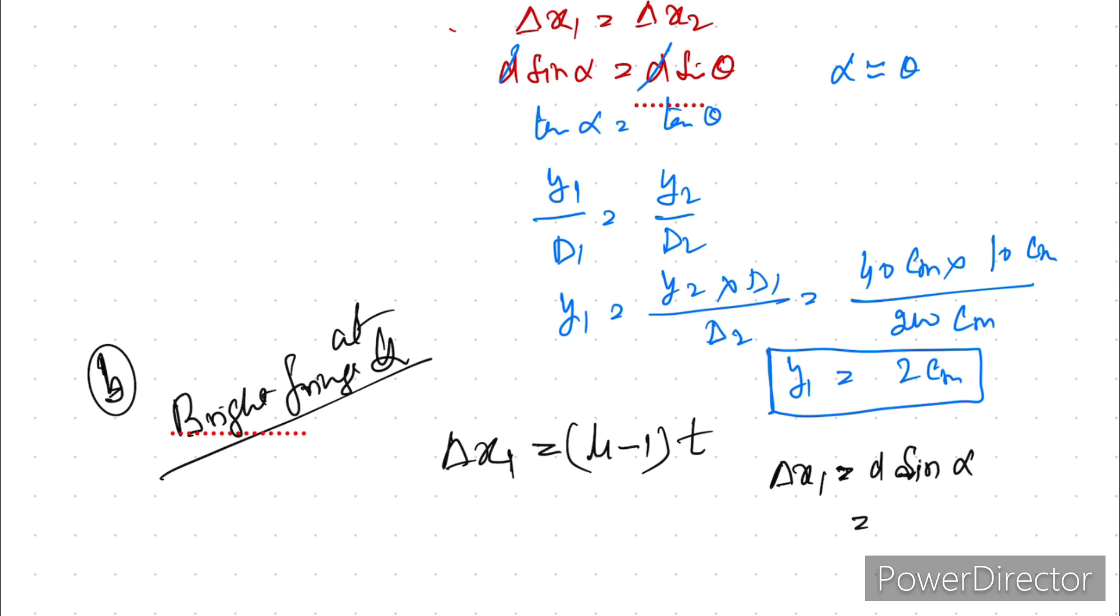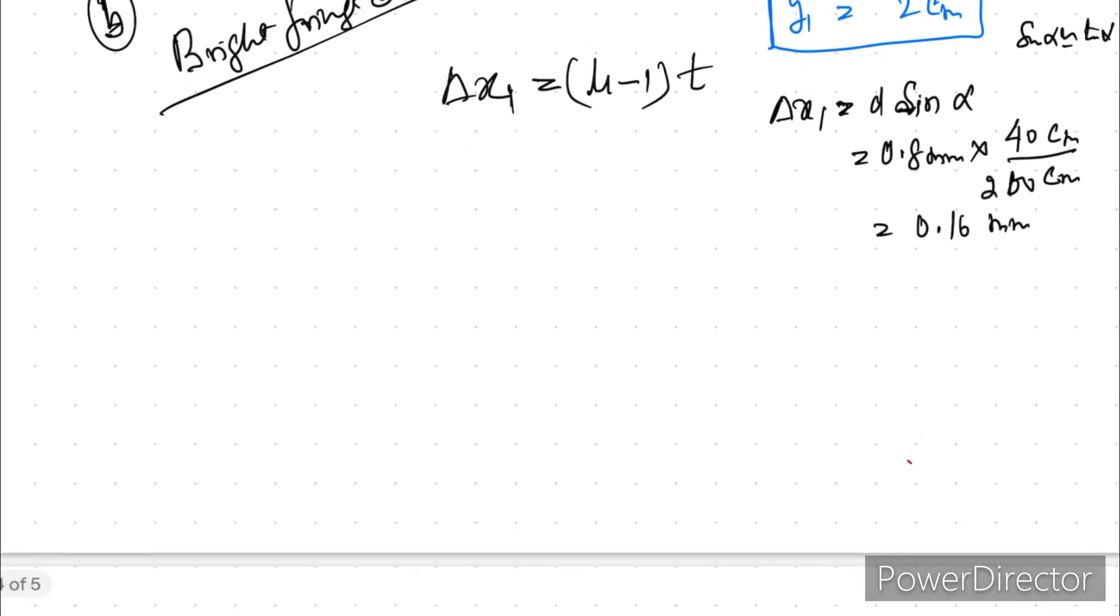And this we can write it as 0.8 mm into, sin alpha we can take as tan alpha and that will be nothing but 40 cm upon 200 cm. And this will come as 0.16 mm. So 0.16 mm is delta x1. So if we equate this mu minus 1, t is equal to 0.16 mm.